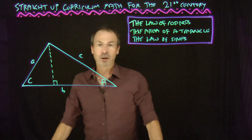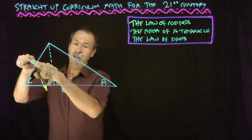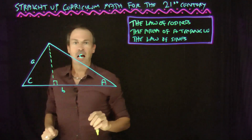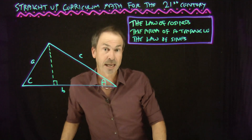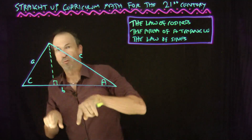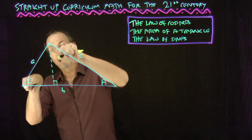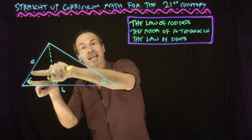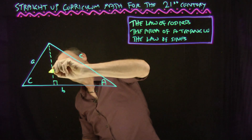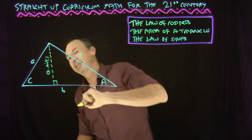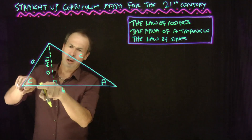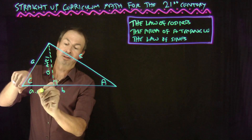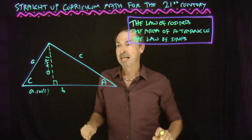I want to express everything in terms of angle C. I can see a right triangle, and the opposite side is sine of C — but scaled up by factor a, so it's a·sin(C). The adjacent part is a·cos(C). Since the whole base length is b, the remaining portion must be b minus a·cos(C).